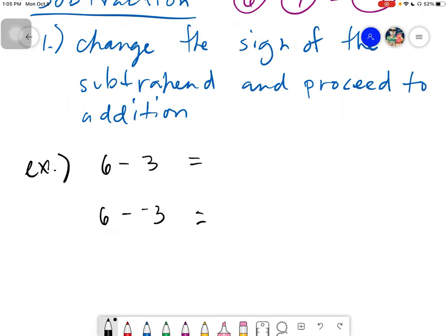And then again, the rule is very simple. What you do, you have to take the 6 again. Then you take 3 but you have to change the sign, wherein the sign of this 3 before is positive. Therefore, it would become negative. And then of course you need to proceed to addition.